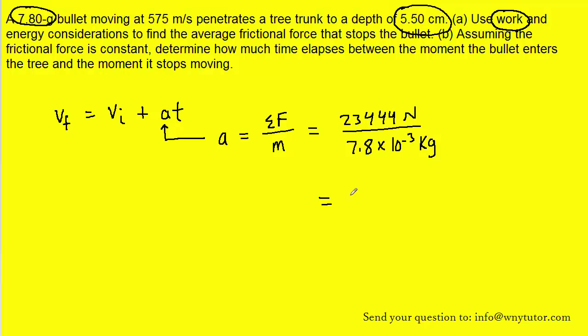Now, this acceleration is enormous, but it actually makes sense because the tree is stopping a bullet in only five and a half centimeters, so it's going to have to exert a tremendous acceleration in order to accomplish that. So, with that value for acceleration in mind, we can plug in the final velocity, the initial velocity, and that acceleration, and that will give us the time.